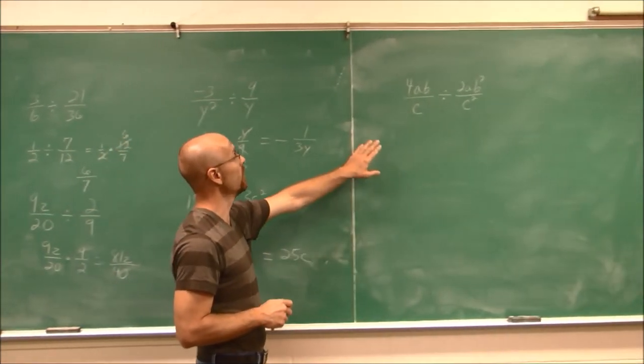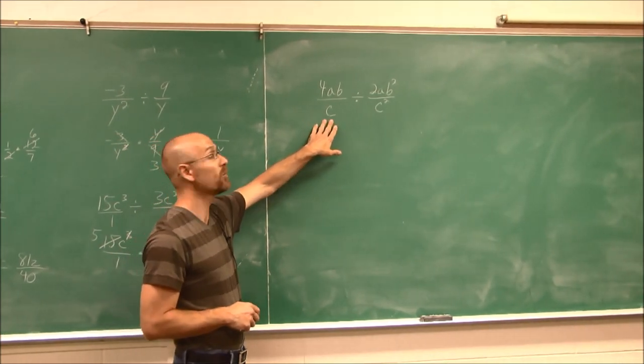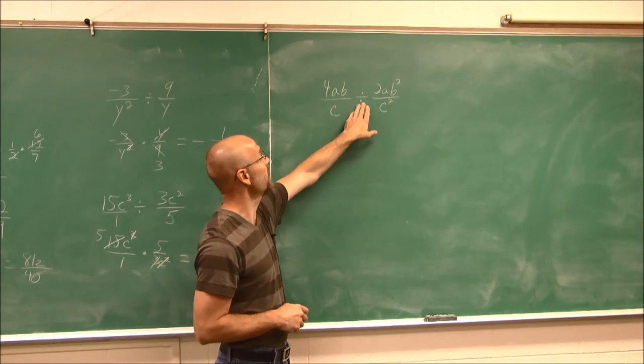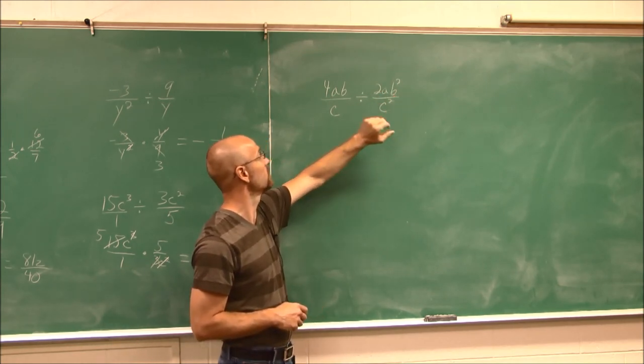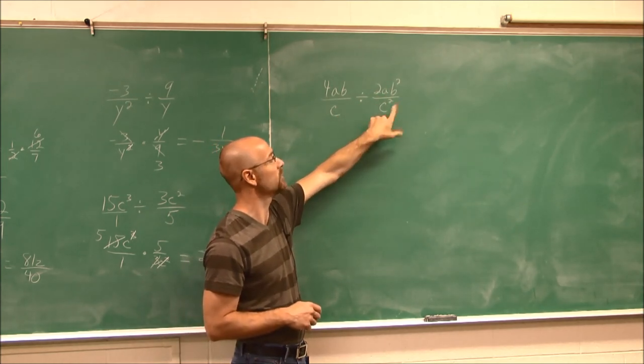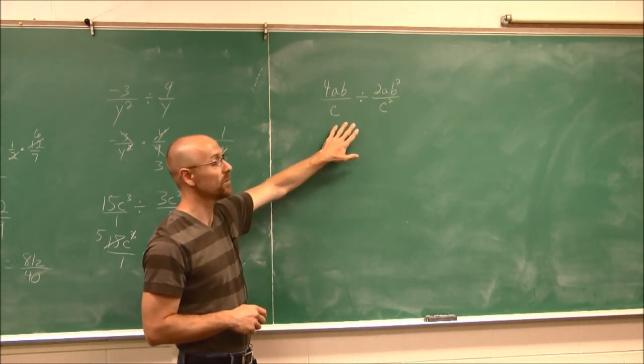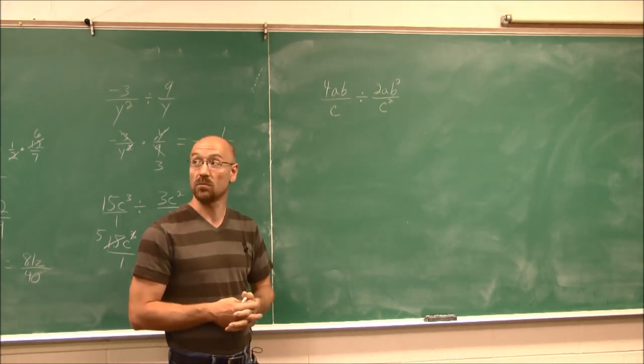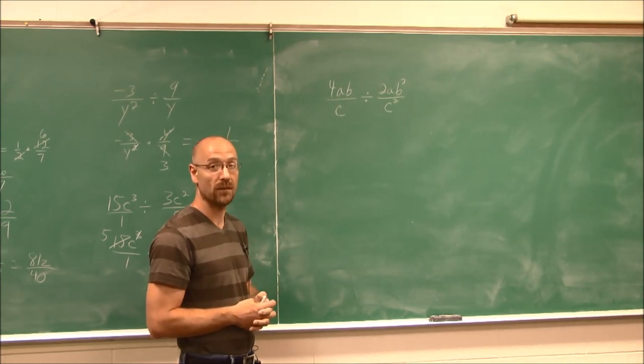All right, one more for you to try. We have 4ab/c divided by 2ab²/c². Try this one for yourself. Cancel what you can and simplify. This has been Section 2.6, Part 1. Thank you for watching.